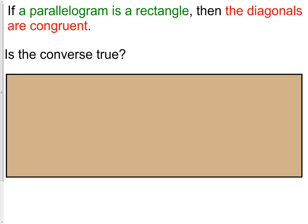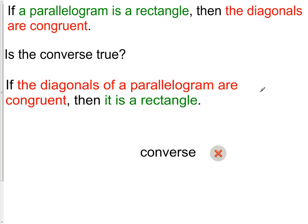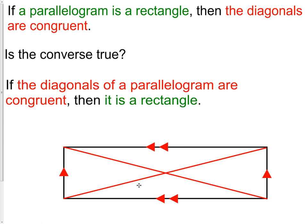Here's another question. If a parallelogram is a rectangle, then the diagonals are congruent. If the diagonals of a parallelogram are congruent, then it is a rectangle. So we have a couple of statements there. We have our original statement that we knew. If it is a rectangle, the diagonals are congruent. Now we're saying, if the diagonals are congruent, does it have to be a rectangle? That is actually true.